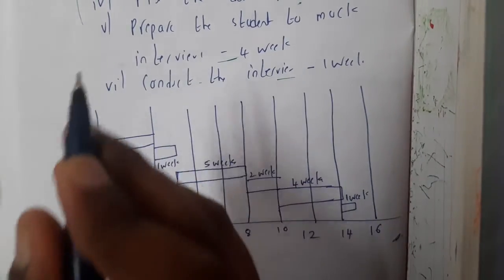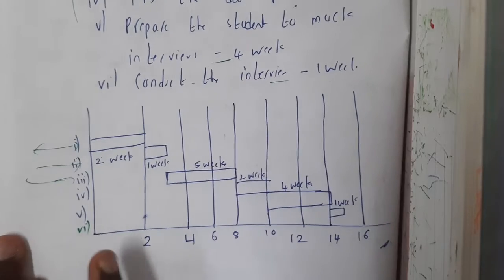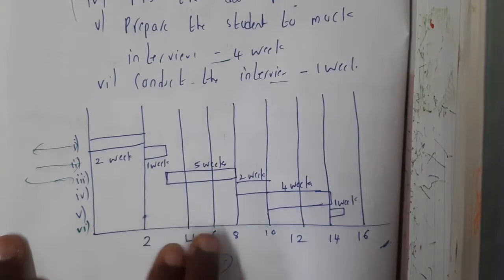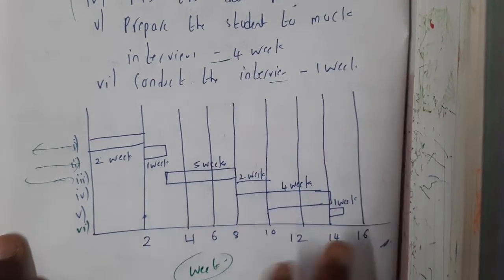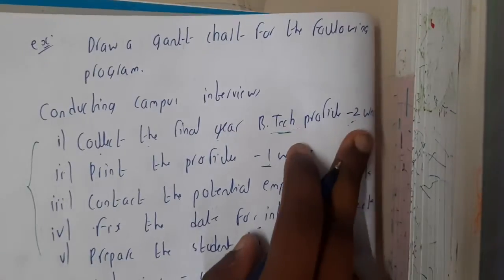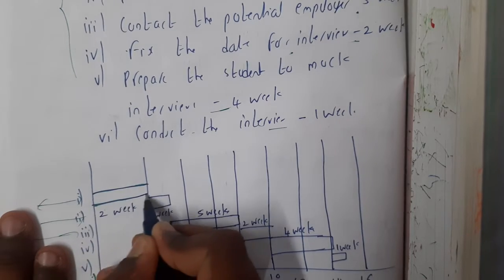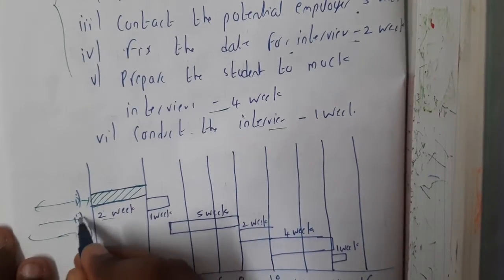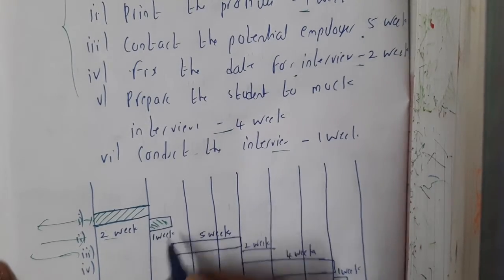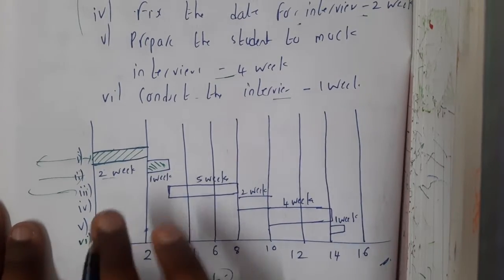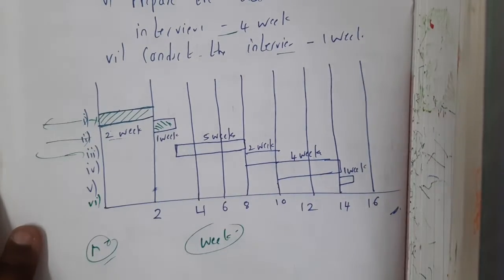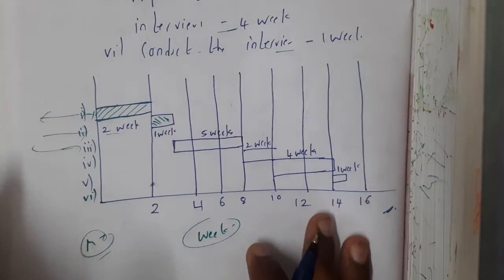These tasks with their respective times can be represented in a Gantt chart easily. On the y-axis you write the activity or statement, and on the x-axis you write the time intervals. Here we took weeks with an interval of two weeks: 2, 4, 6, 8, 10, 12, 14, 16. For the first activity, collecting the profile, a bar is drawn spanning two weeks. For the second activity, printing the profile, a bar is drawn spanning one week. Each bar indicates how long that activity will continue. Faculty may also ask for these Gantt charts in major or mini projects.